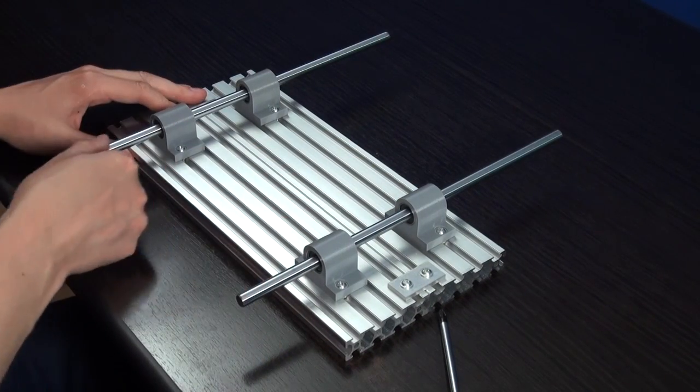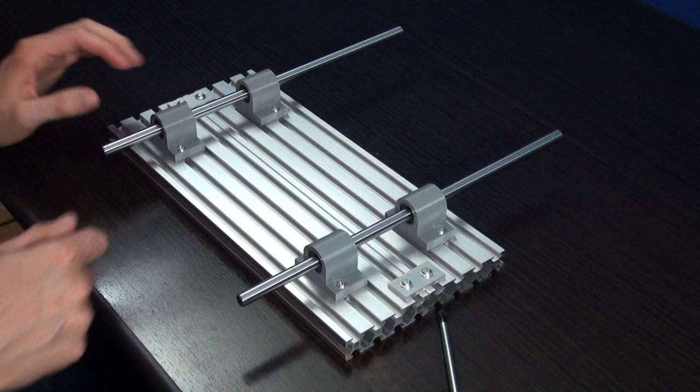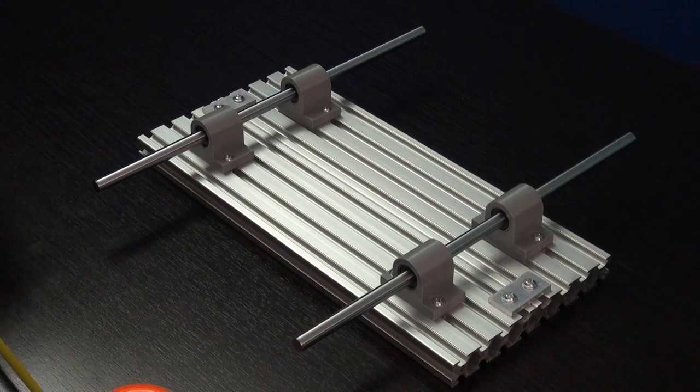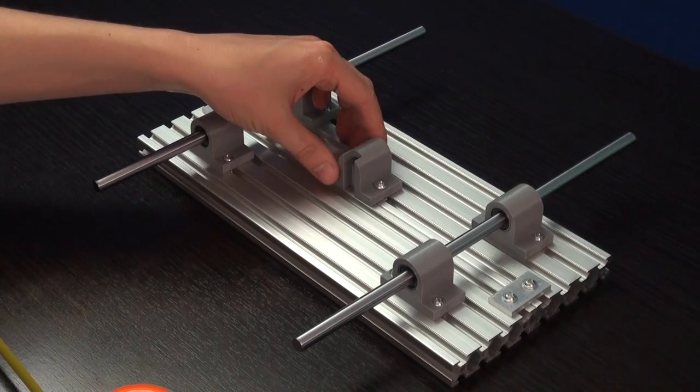If you look from above and everything is good, we can go to the next step. If the rails are not parallel or don't move freely, you have to redo this step until you get it right. The holder for the lead screw is now placed between the two support rails.